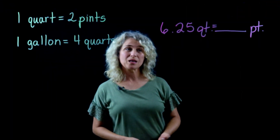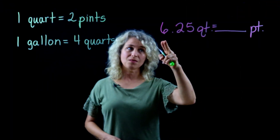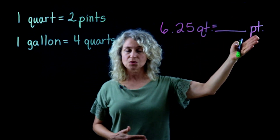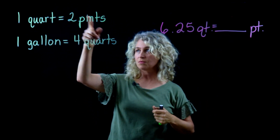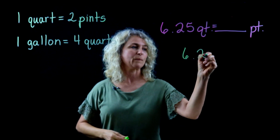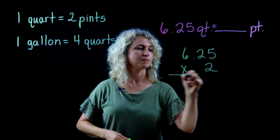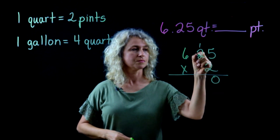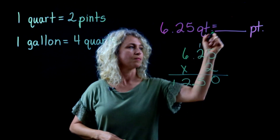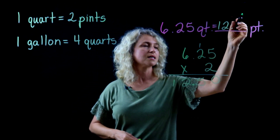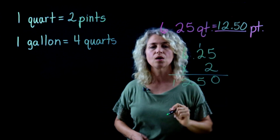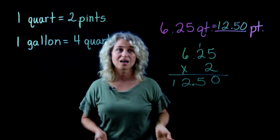Alright, in this example you have a decimal number — 6.25 quarts — and we're changing it to pints. So look at the conversion from quarts to pints and we're multiplying times 2. So 6.25 times 2 equals 12.50 pints, or 12 and a half pints.